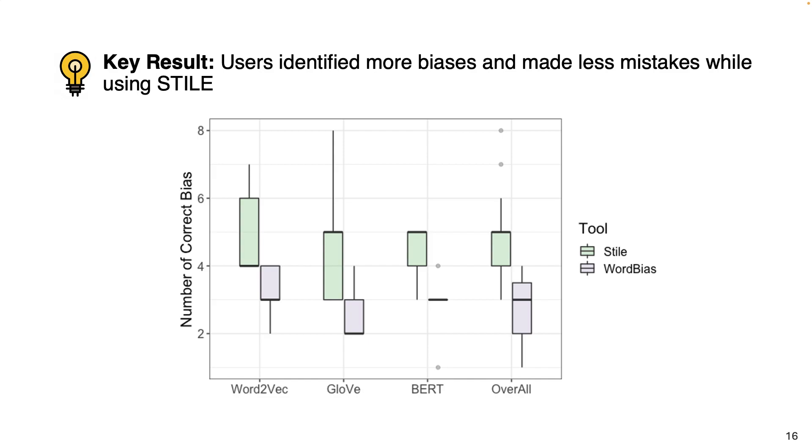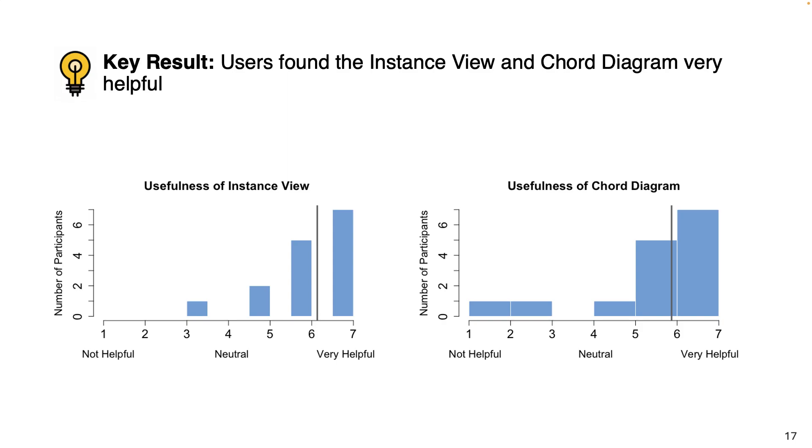Our results show that users identify more biases using Style for all three models. On top of that, users often documented wrong reasons or documented completely incorrect biases when using WordBias. We believe allowing a side-by-side data exploration feature helps users to verify bias in Style and help them correct any mistakes that they might have made by just looking at the list or visualization of detected biases. Our individual user ratings also show that users found both the chord diagram and the instance view to be very helpful in their bias identification and debugging process.